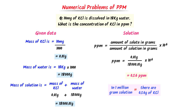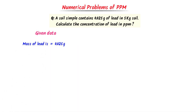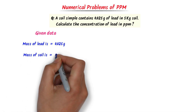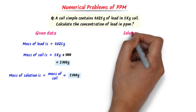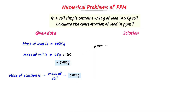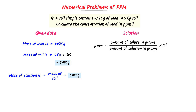Secondly, consider this numerical problem: a soil sample contains 0.025 grams of lead in 5 kg of soil. Calculate the concentration of lead in ppm. I write the given data: the given mass of lead is 0.025 grams, and the given mass of soil is 5 kg. I convert it to grams by multiplying by 1000, giving 5000 grams. Here the solution is soil and its mass is 5000 grams. We already learned the formula of ppm: amount of solute in grams upon amount of solution in grams multiplied by 10⁶.